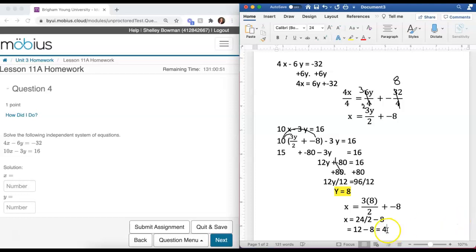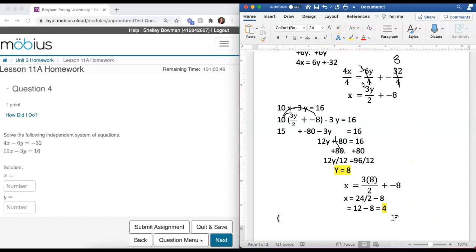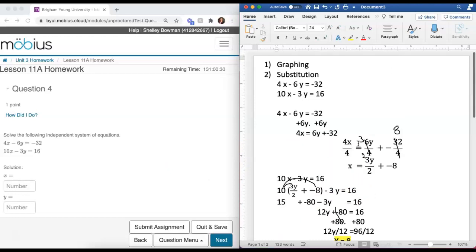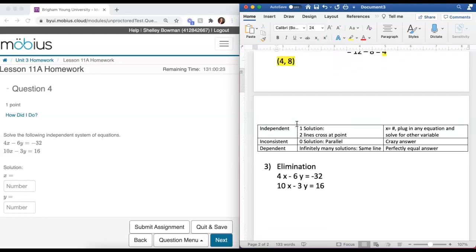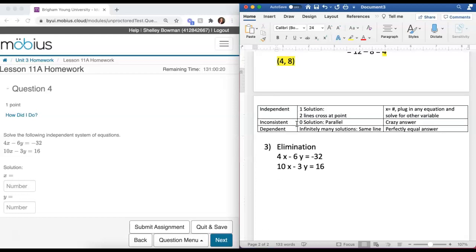That is the second part of our coordinate pair. Our ordered pair is 4 comma 8, x and then y. We can write that in and check our solution. But I am also going to do a part B with the elimination method, which I find is much easier than the substitution method and has fewer problems with those negatives and fractions.